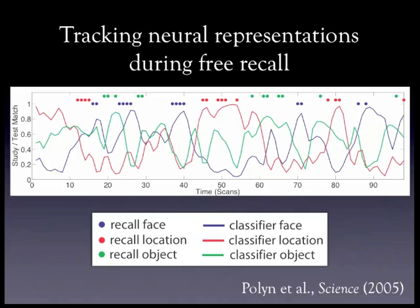Whenever you see multiple dots of the same color in a row, that's the person performing category clustering — remembering a number of items from the same category in a burst. And it looked to us like the category estimates were ramping up even prior to the person discovering that first item in their memory.